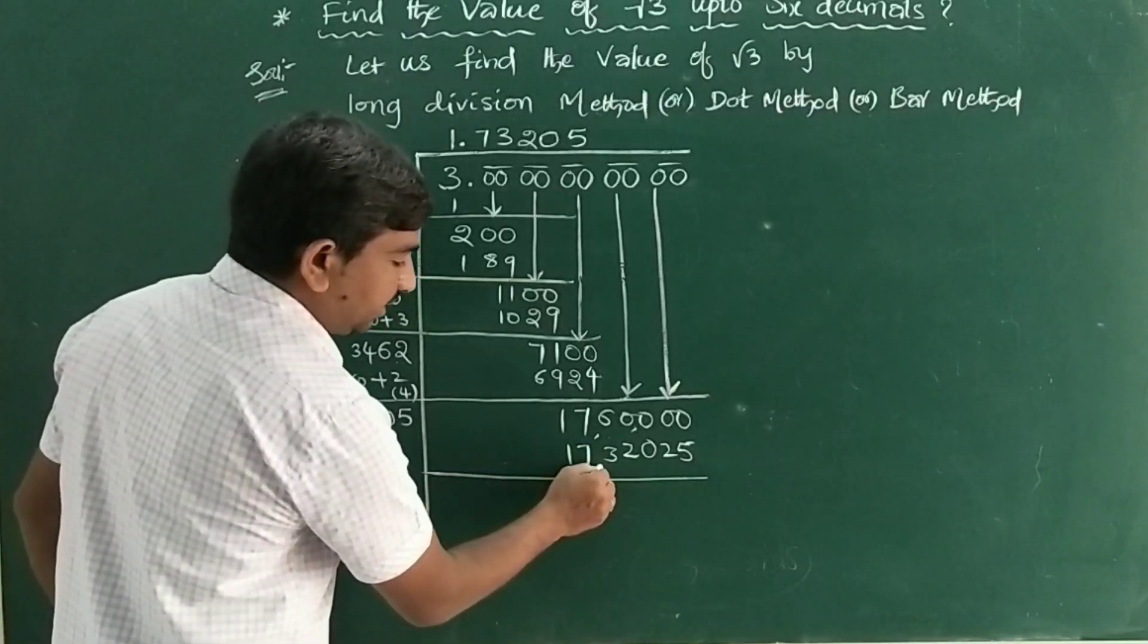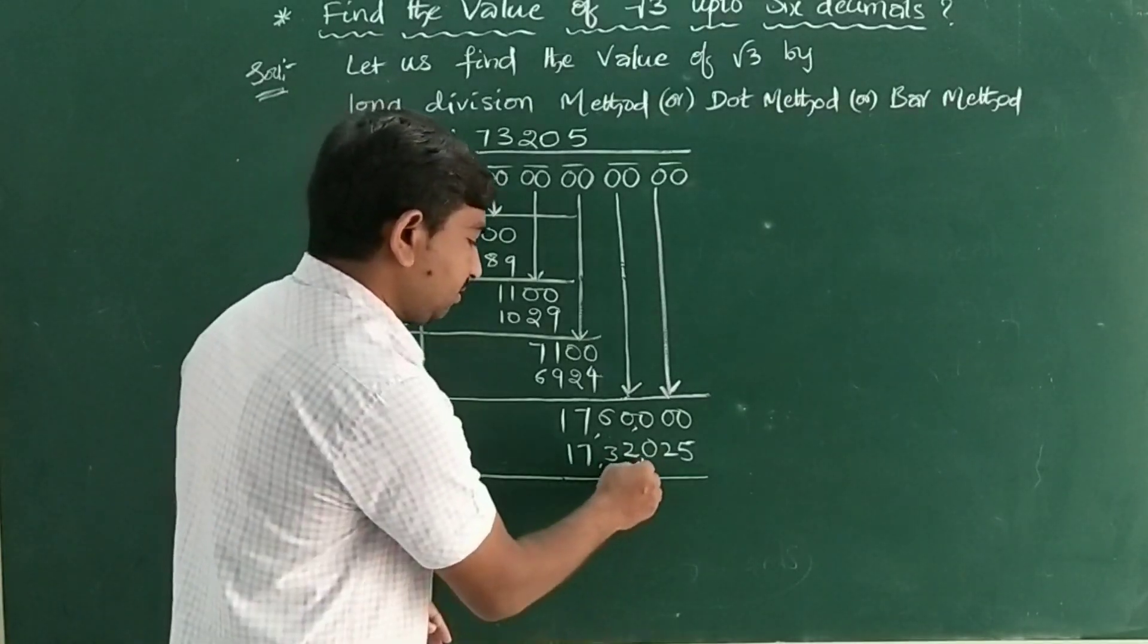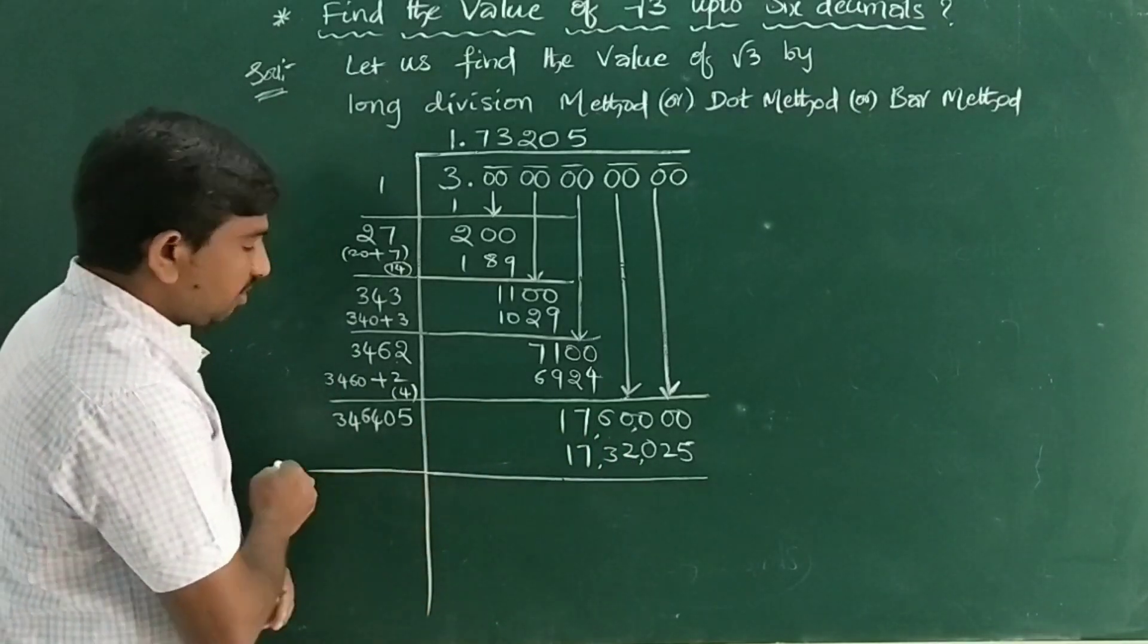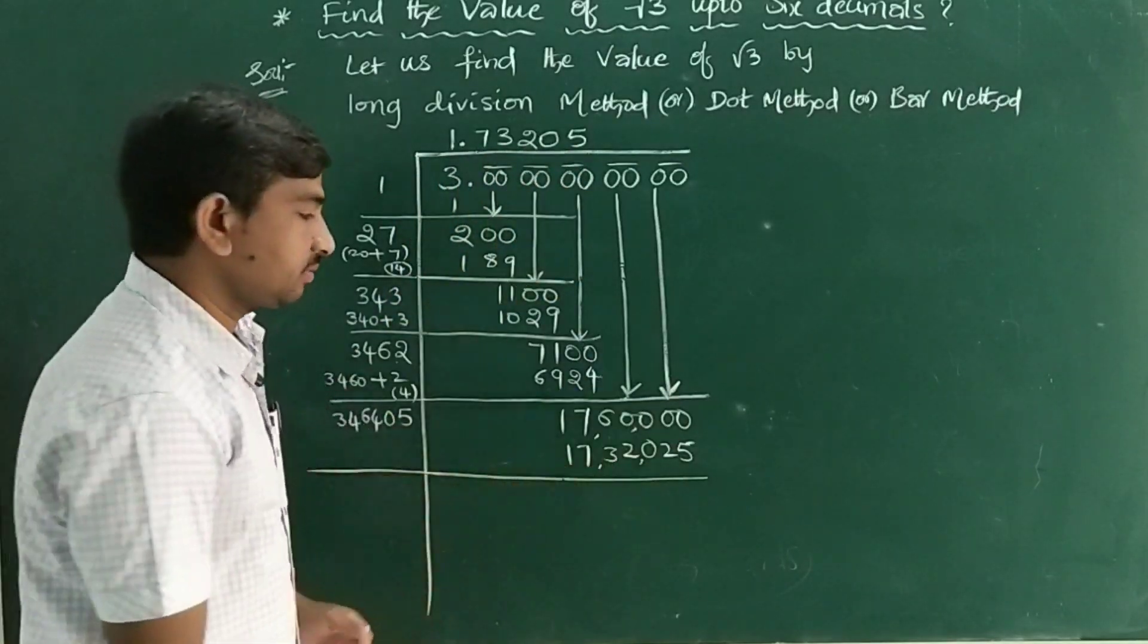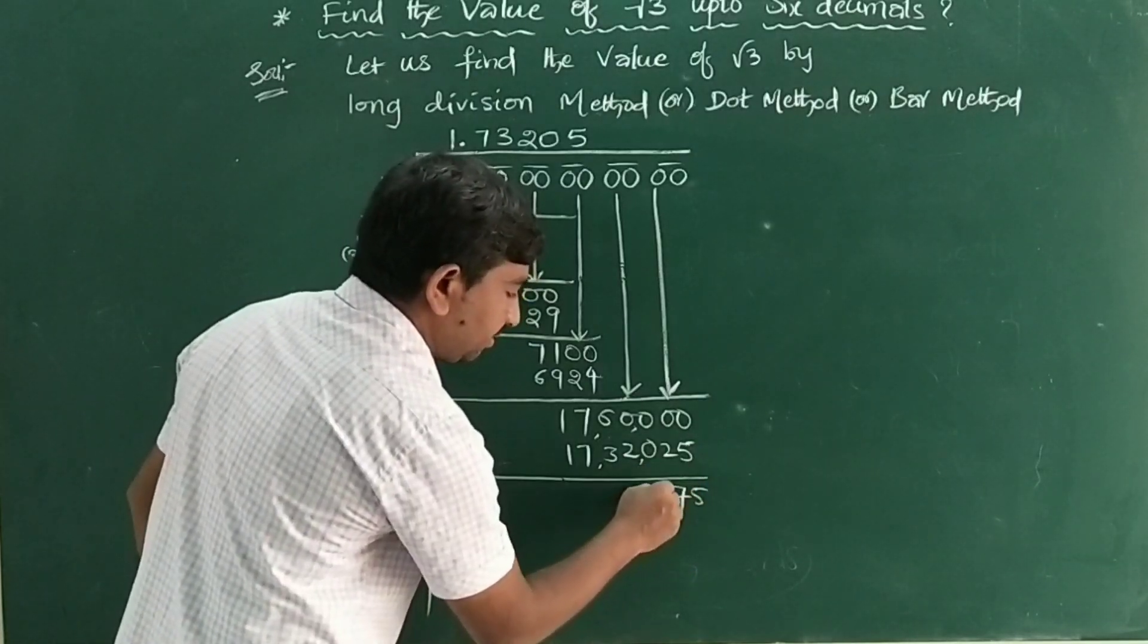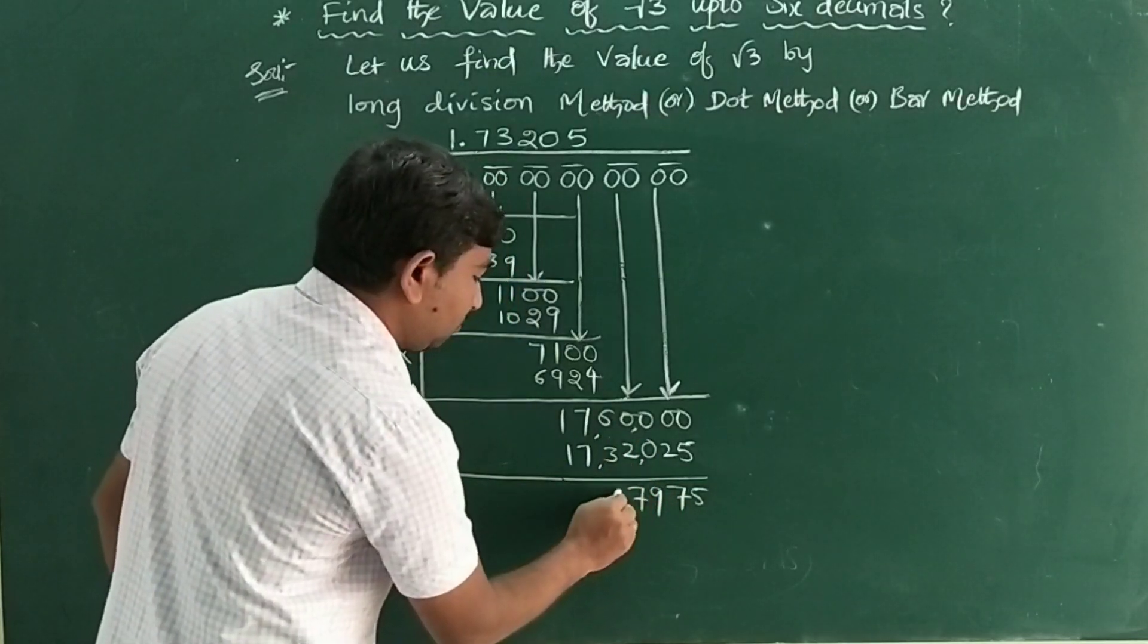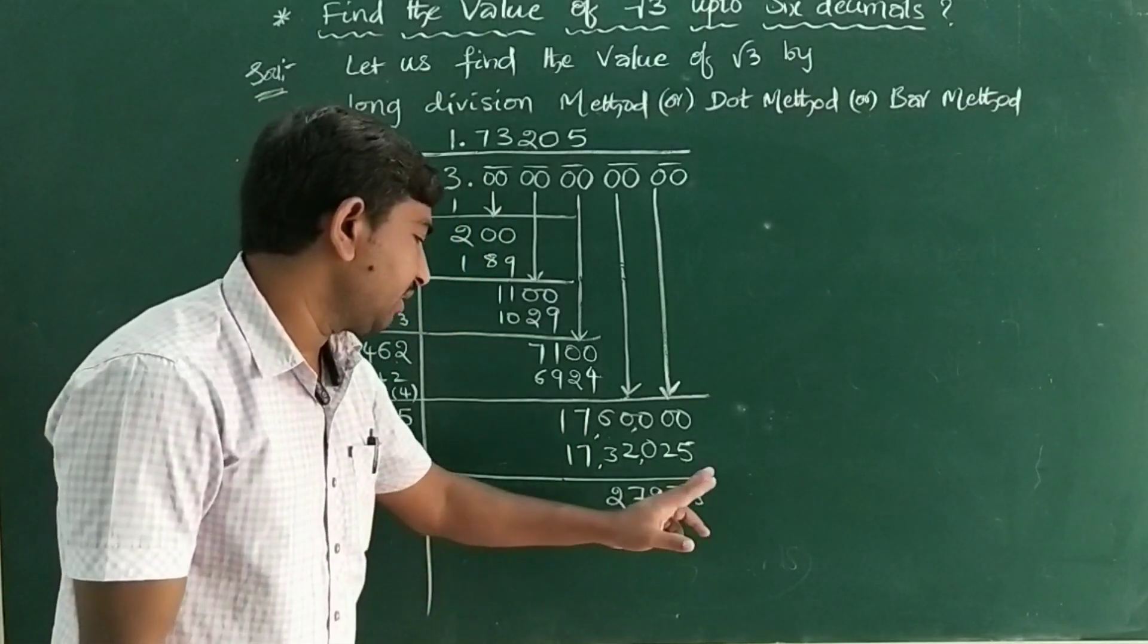Now observe. We got 173225. This is our requirement: 17,32,025. Subtract it. How many decimals do we have? 1.73205. Subtracting: 0, 10 minus 5 is 5, 9 minus 7 is... continuing the subtraction. The value is 27,975.